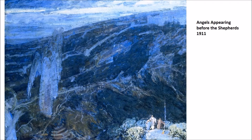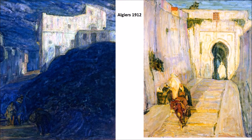Angels Appearing Before the Shepherds from 1911 is one of my favorites. At the very bottom right corner we can see the shepherds themselves, and as we move up to the left, we see the angels. The angels almost appear unfinished, but it's just this concept of abstraction — the idea that looking up at these angels and seeing something manifest in that way, you might not directly recognize them as being realistic.